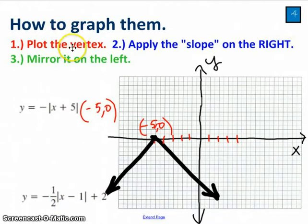Let me do one more on the same graph paper. Notice step 1, plot the vertex. Well, this time my vertex is going to be 1, 2, positive 1, positive 2. So I've plot that. Second step, apply the slope. This time my slope is negative 1 over 2. So I go down 1 and over 2 and draw my ray. And then my third step is to mirror that shape on the left. Done.